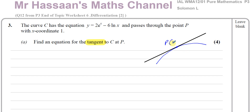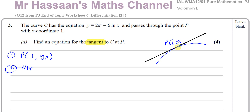At point P, we know the x-coordinate is 1 but the y-coordinate we don't know. To find the equation of this straight line, we need two things: a point on the line — of which we know part of it — and we need to know the gradient of the tangent, which equals the gradient of the curve at point P. If I find those two pieces of information, I'll be able to find the equation of the tangent.